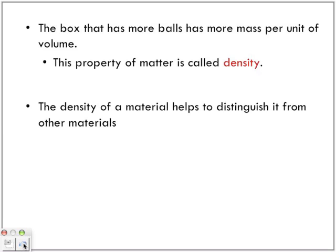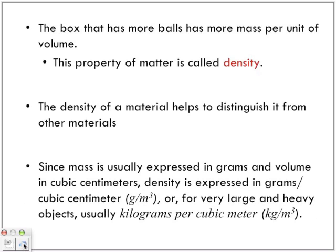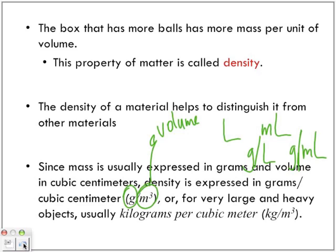This property of matter is called density. The density of a material helps to distinguish it from other materials. Since mass is usually expressed in grams and volume in cubic centimeters, density is expressed in grams per cubic centimeter. So g/m³, meters cubed is a measurement of volume. Other units we can use to measure volume are liters, milliliters—we can have grams per liter or grams per milliliter. We can also have kilograms or even milligrams, depending on how small the object is.